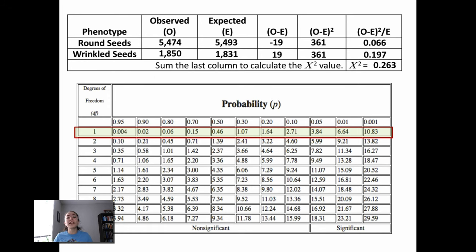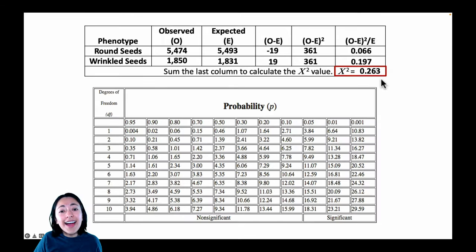Remember that the chi-square value we calculated was 0.263. Where does that fall along row 1? A chi-square of 0.263 would fall right here, between 0.15 and 0.46. Therefore, if we look at the top row, which represents our p-values, our p-value would fall between 0.5 and 0.7.